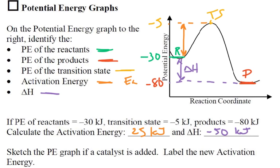Now, what would happen if we were to put in a catalyst? If I add a catalyst — I'll draw that in blue — all that does is lower this energy barrier by some arbitrary amount. The new activation energy is going to be from the reactants to the top of the new, lower transition state.